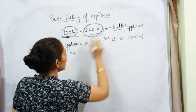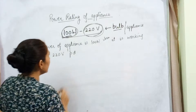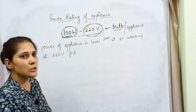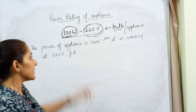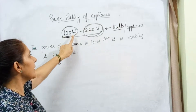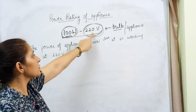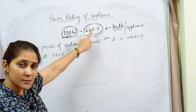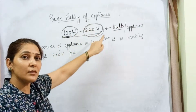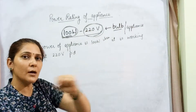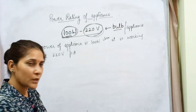If this potential difference varies, the power of the appliance also varies. This power rating will hold good only when this appliance works at the potential difference given on the power rating of the appliance.